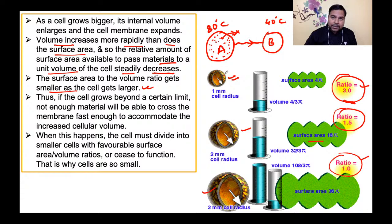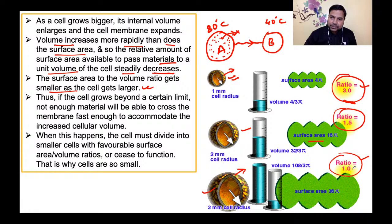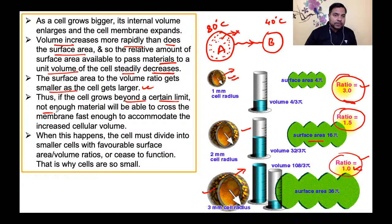इसका मतलब है कि छोटा cell, बड़े cell की तुलना में heat more readily dissipate करेगा। बड़े cell का radius बड़ा होने से surface area to volume ratio बहुत कम होता है, इसलिए जिस proportion में heat production होगा, उस proportion में surface area उसे dissipate नहीं करेगा। If the cell grows beyond a certain limit, not enough material will be able to cross the membrane fast enough to accommodate the increased cellular volume।